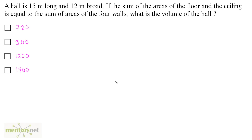A hall is 15 meters long and 12 meters broad. If the sum of the areas of the floor and the ceiling is equal to the sum of areas of the 4 walls, what is the volume of the hall?